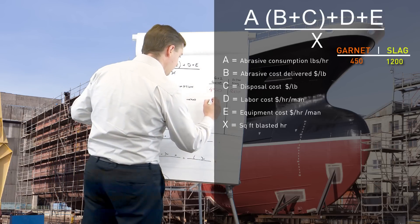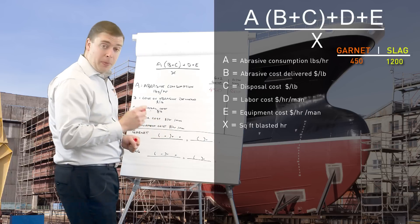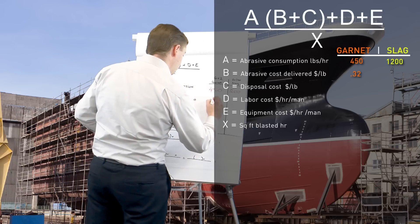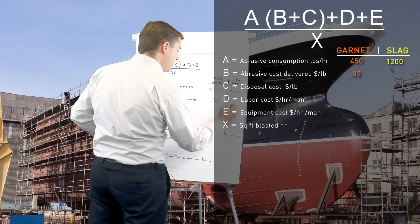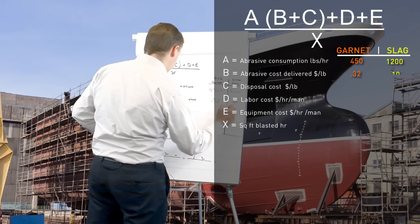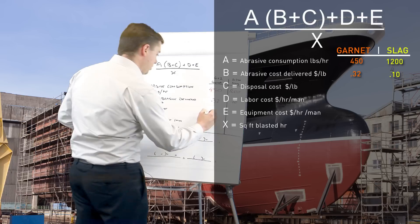Garnet is a whopping 30 cents a pound plus freight which gives it 32 cents a pound delivered and slag was delivered for 10 cents a pound. Disposal cost was even at 2 cents a pound.